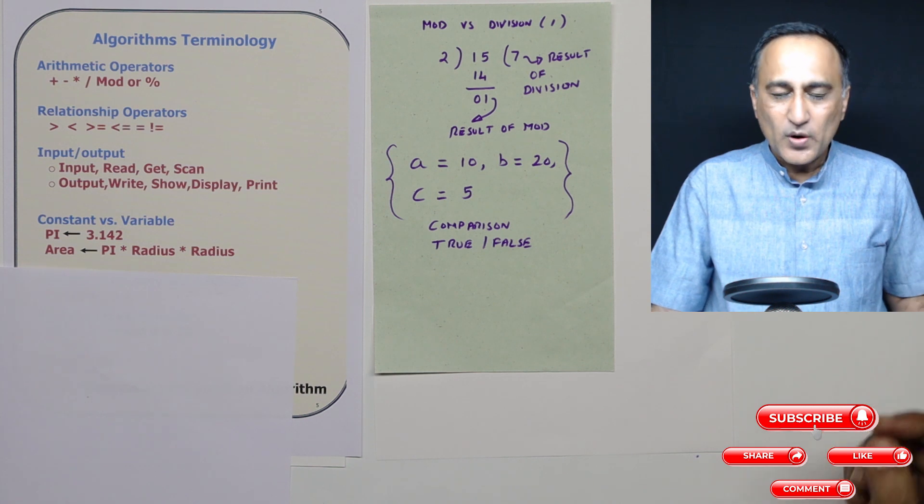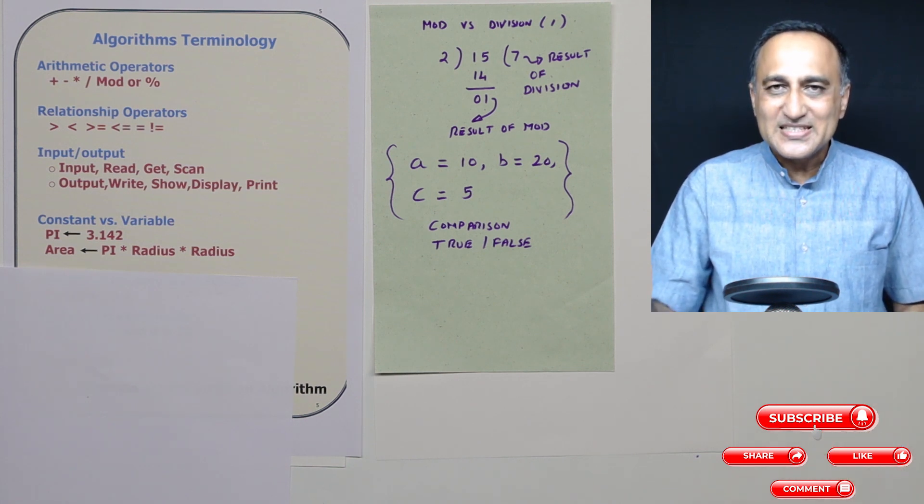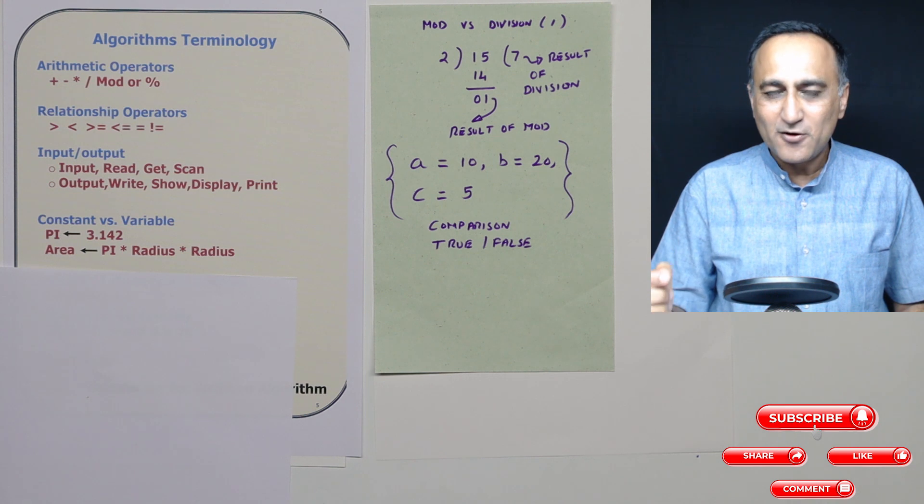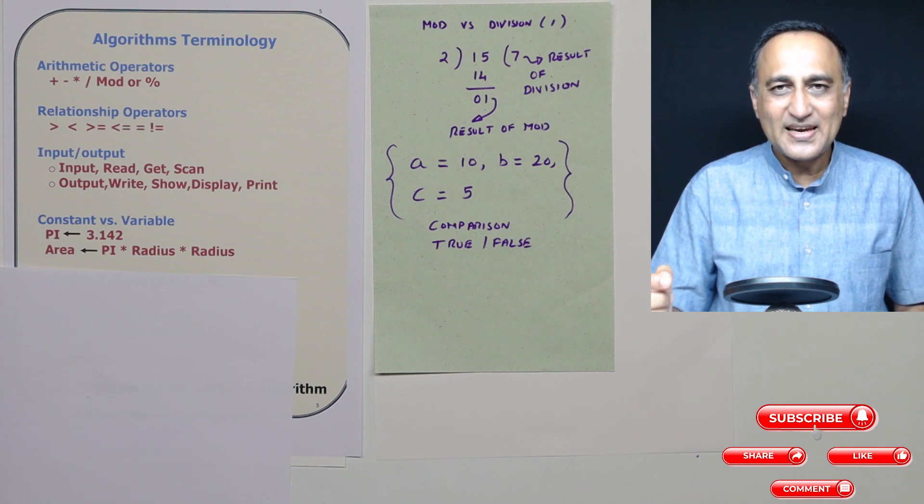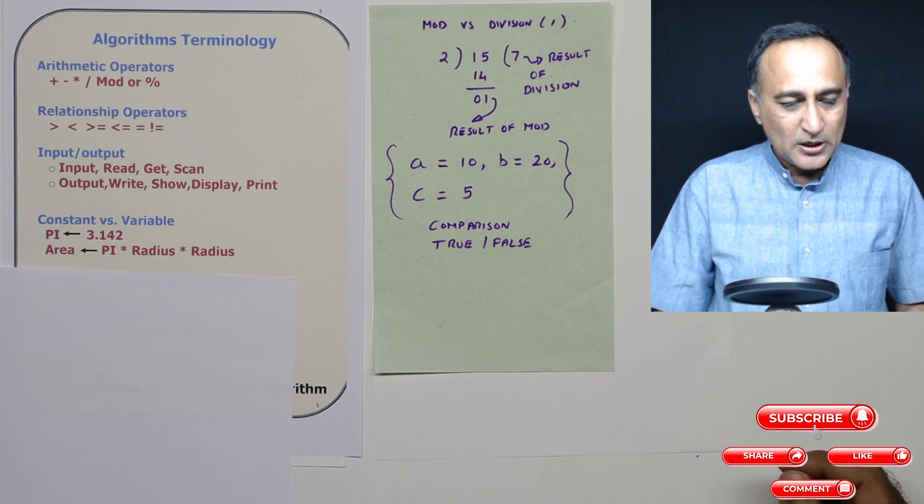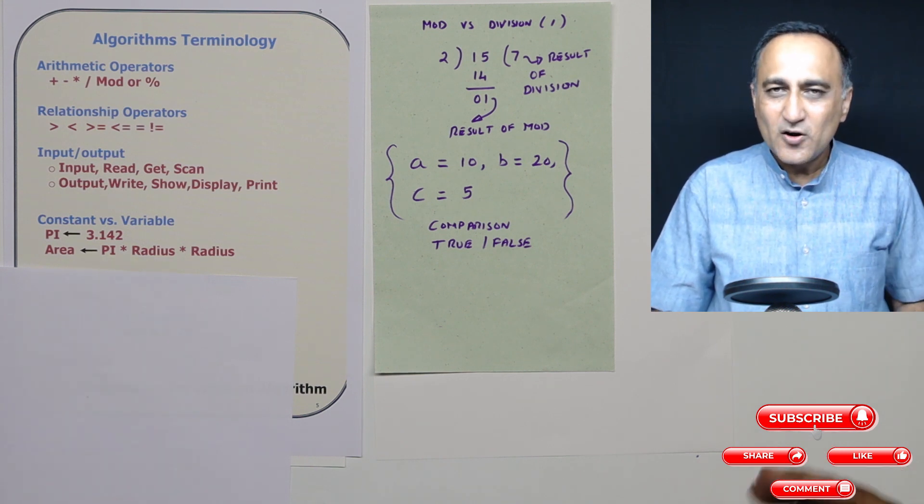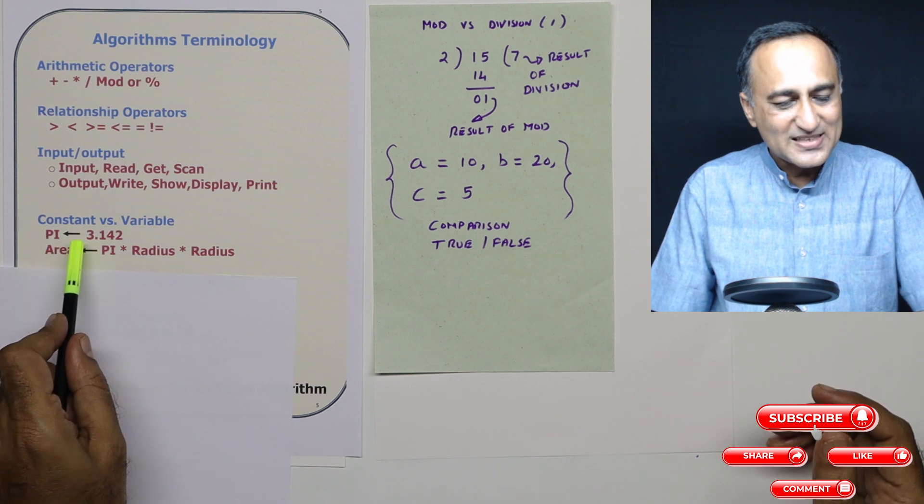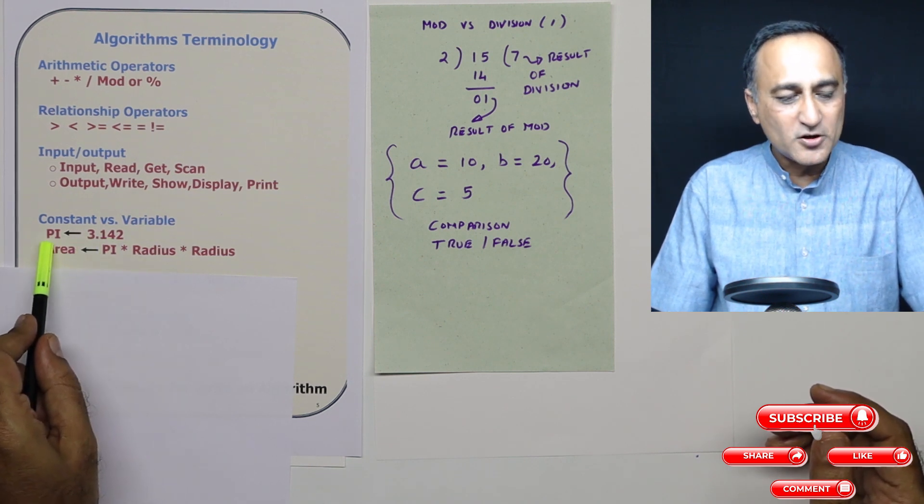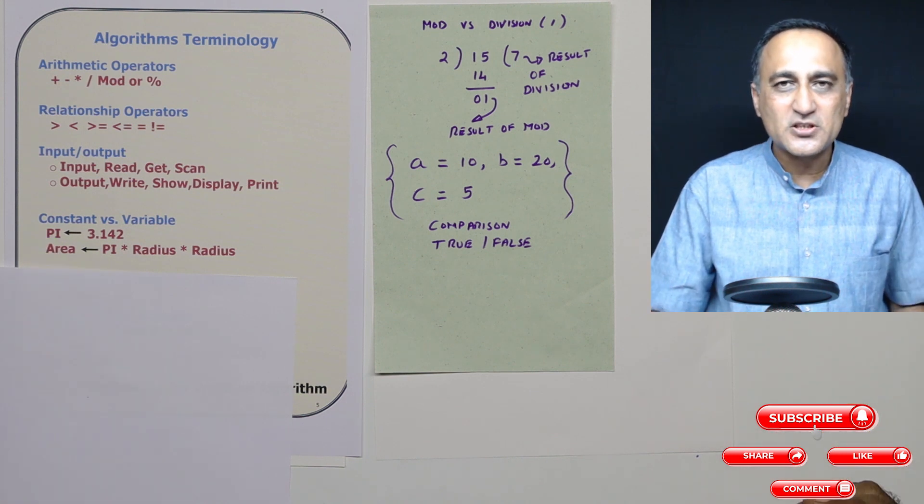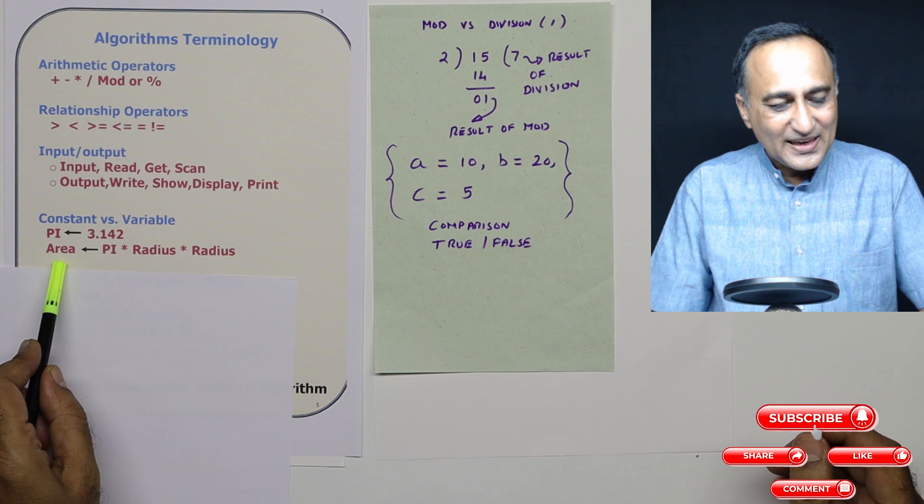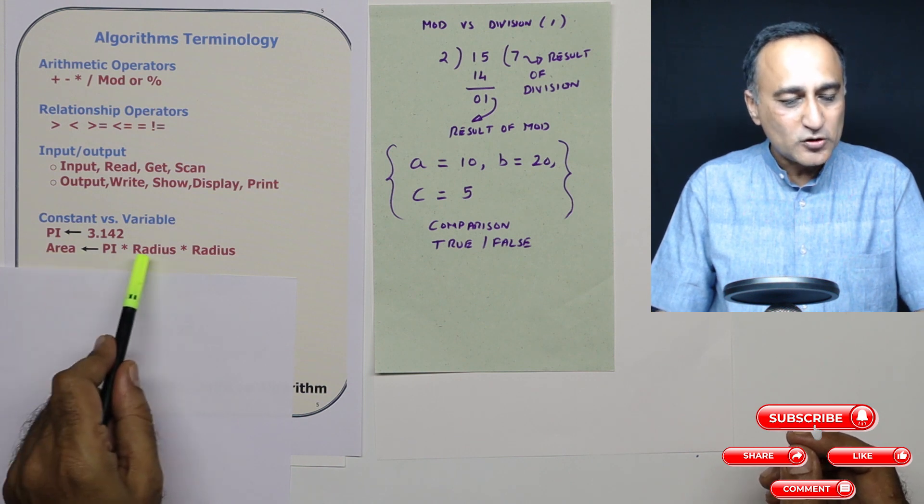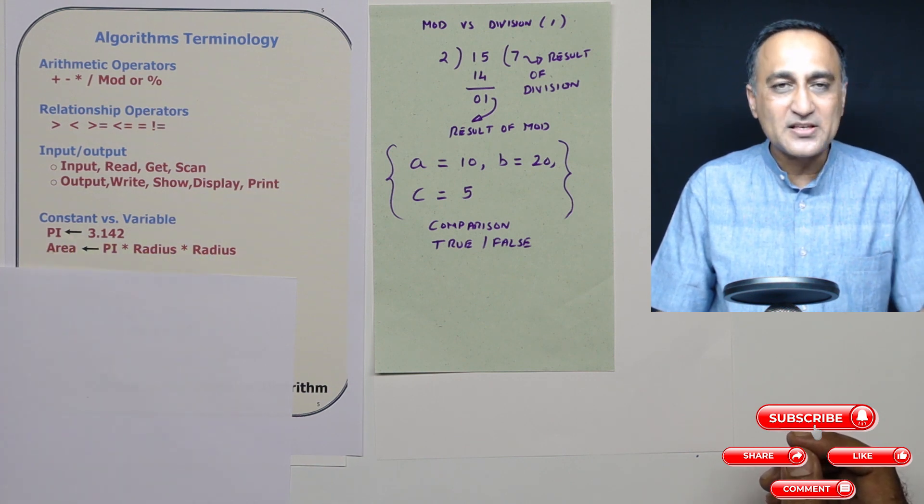When we are writing programs, there are certain memory locations which are constant and do not change. For example, if I have to calculate the area of a circle, the formula is area equals pi r square. If you look at it, the value of pi - we are not calculating it or asking the user to enter it. It is a constant which is defined by us. So I will say pi as 3.142. That means I cannot change the value of pi. This is known as a constant data type. Whereas area and radius - I will read the radius, and based on the value of radius, I'm going to get the value of area. So these both are known as variables, whereas pi is known as a constant.